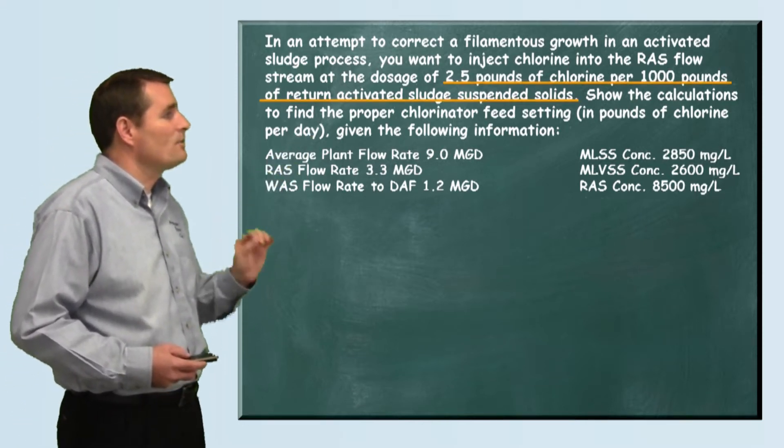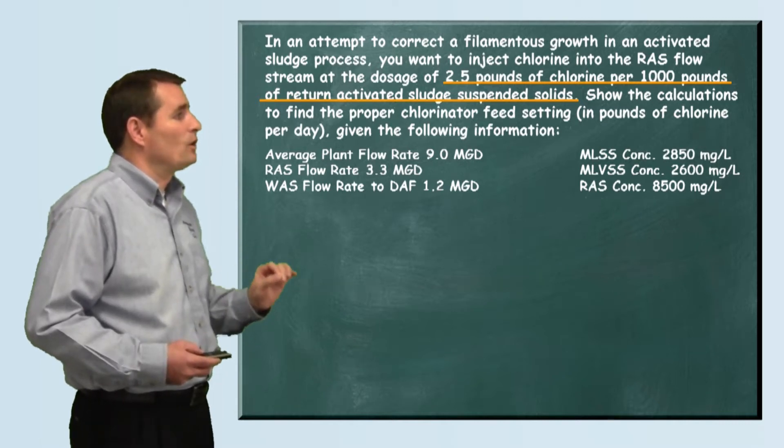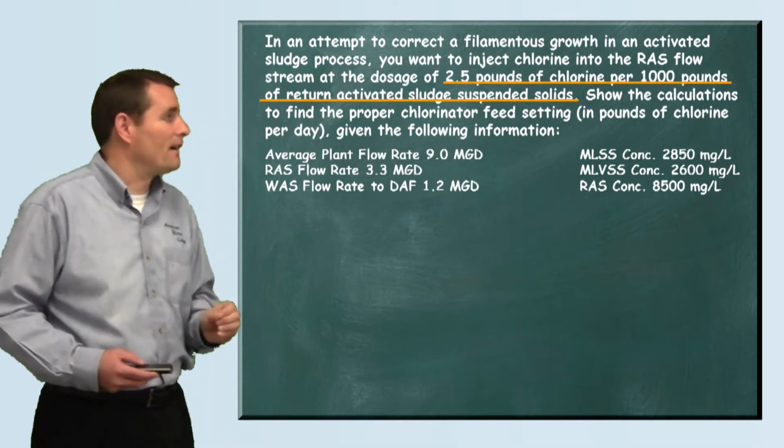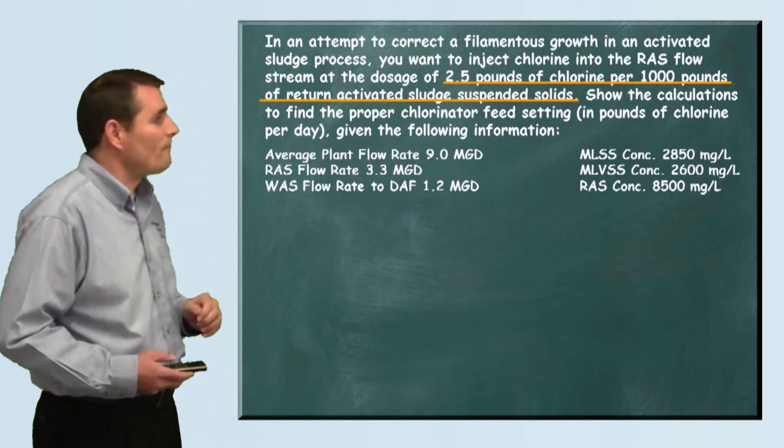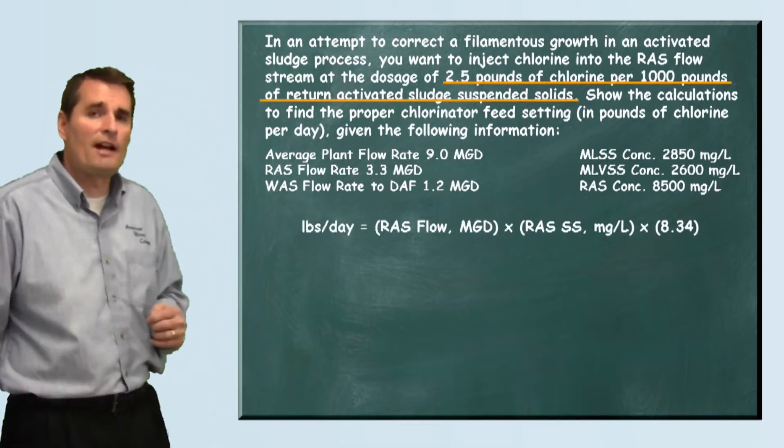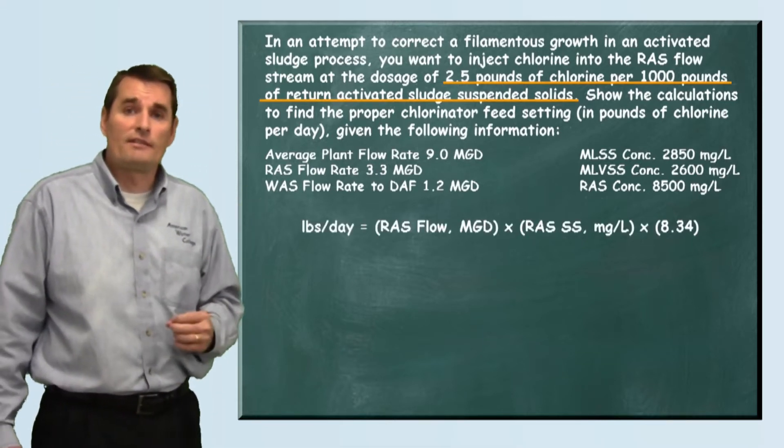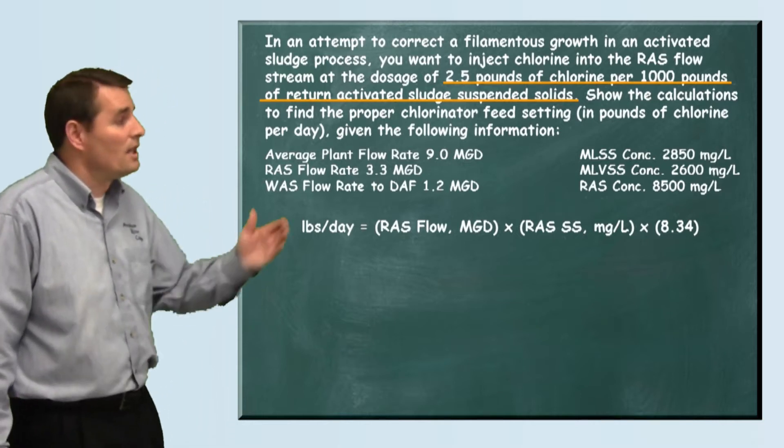They want us to add two and a half pounds of chlorine for every thousand pounds of return activated sludge. So we first need to calculate our pounds per day of return activated sludge or our RAS flow.